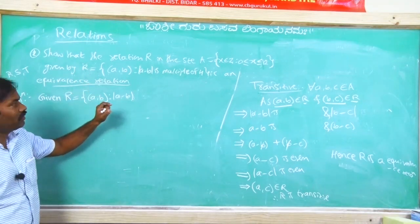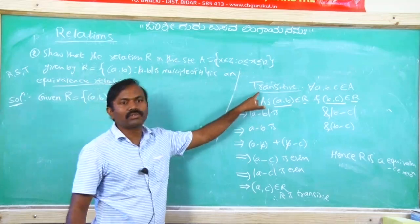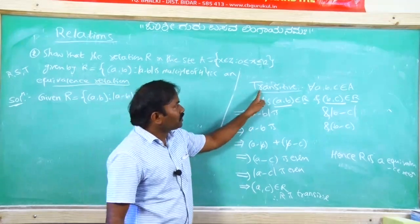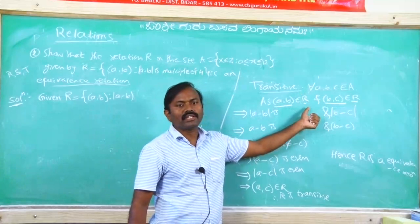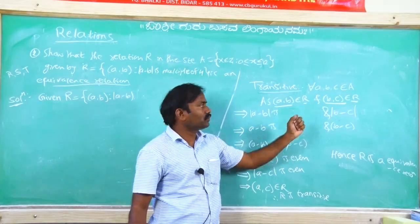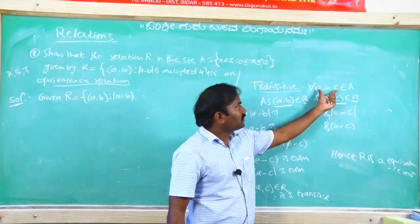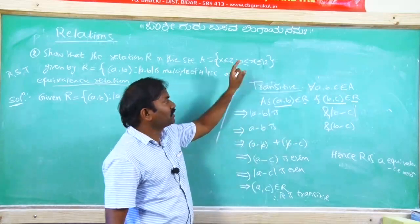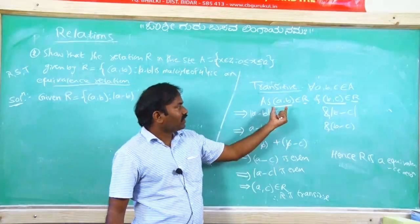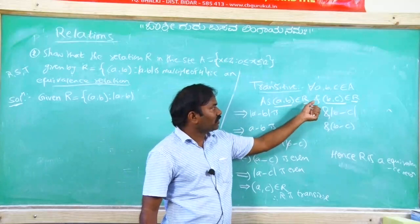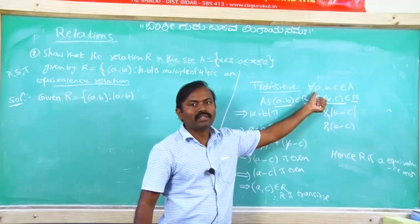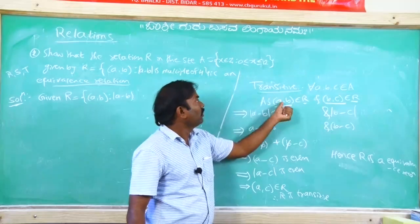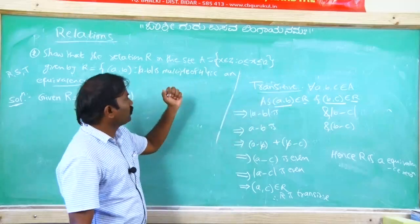Now take this example — the third relation: transitive relation. In the transitive relation, first of all write the condition for transitive. What is the condition? In general, three elements belong to the given non-empty set, as ordered pair (A, B) belongs to R and ordered pair (B, C) belongs to R. This is the condition for transitive relation.